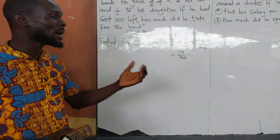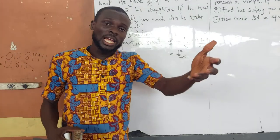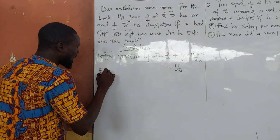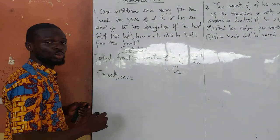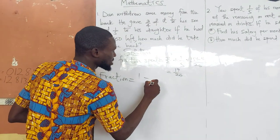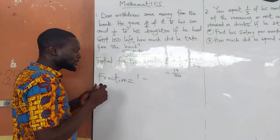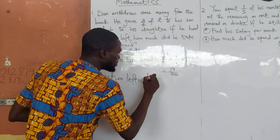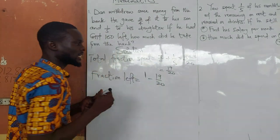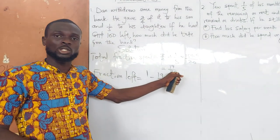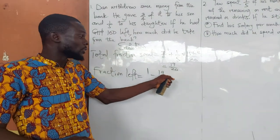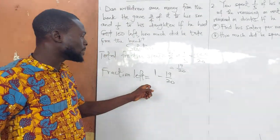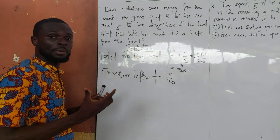Last week we said that once you are able to find your fraction spent, then you calculate your fraction left. And how do you calculate the fraction left? Your fraction left is equal to the total fraction minus the fraction spent. This whole number being one, we can write it as one over one, because every whole number is over one.